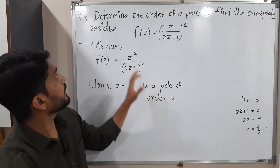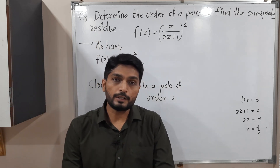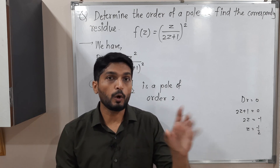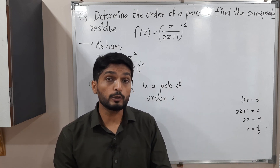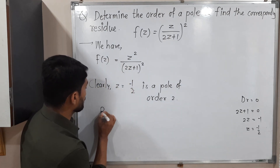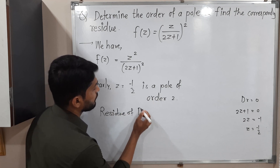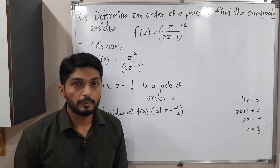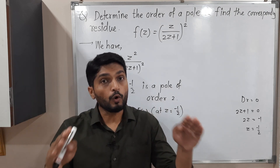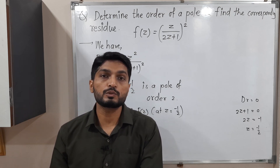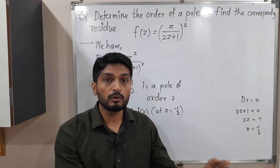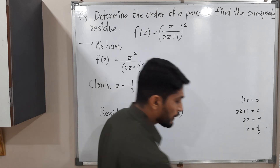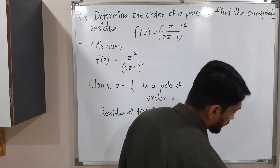After that, we have to find the residue. The definition of residue involves Laurent series expansion — it is the B₁ coefficient of 1/(z − z₀) — but when you have a pole of some order, we have a different formula to calculate the residue. There are two formulas: the first is for a simple pole (pole of order 1), and the second is for a pole with order greater than 1. Here we have order greater than 1, so I will go for the second formula. I will mention the formula and then we will solve the problem.